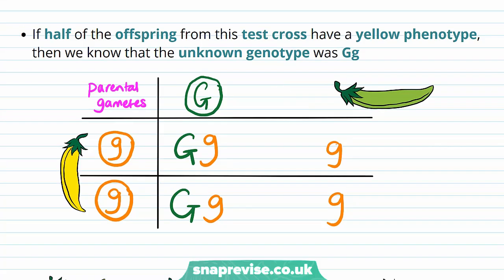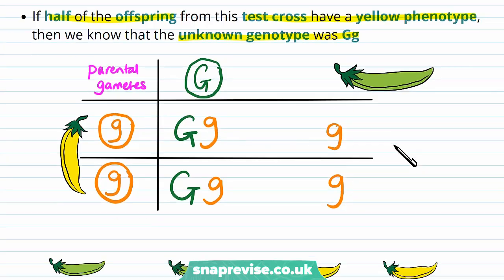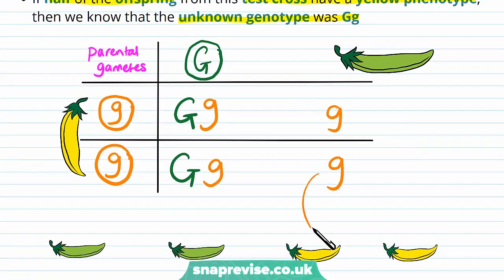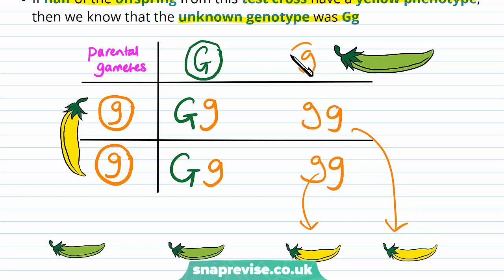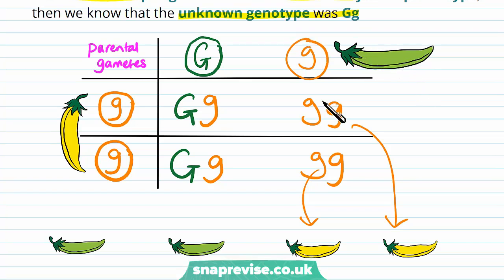On the other hand, if half of our offspring from this test cross have a yellow phenotype, we would then know that the unknown genotype was actually large G, little g. If those yellow pea pods appear, they would have to have a little g from the unknown parent as well, meaning that gamete was little g. So now we know that the original pea pod would actually be large G, little g. It's all about working backwards with the test cross.